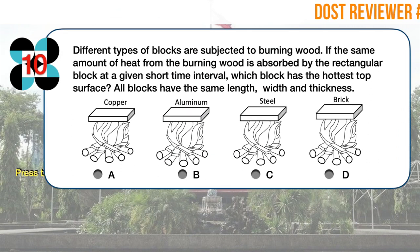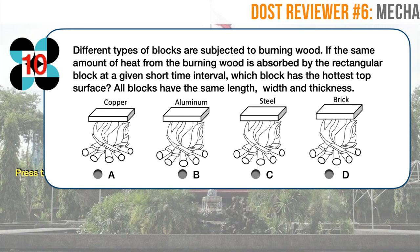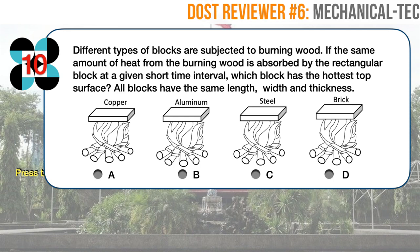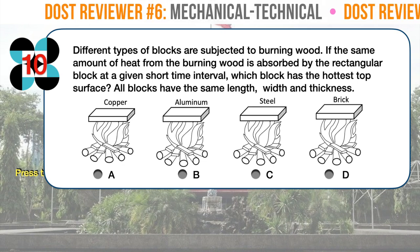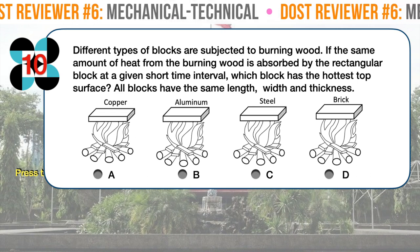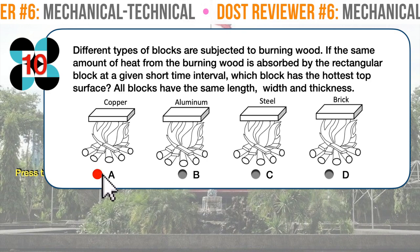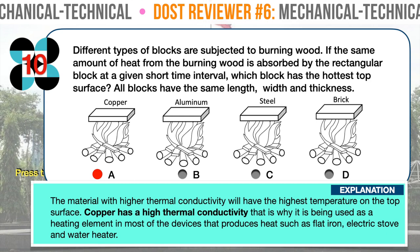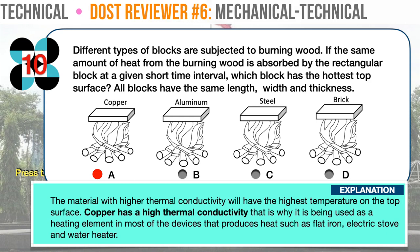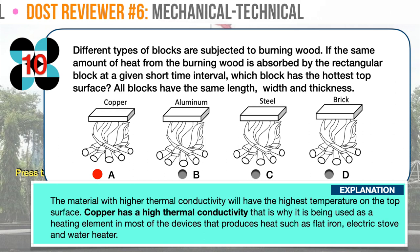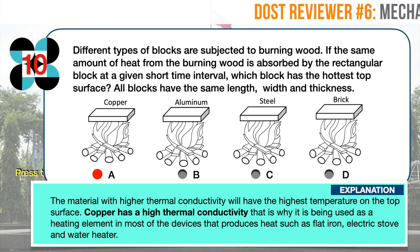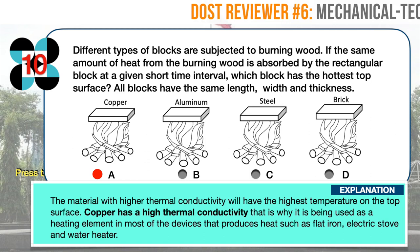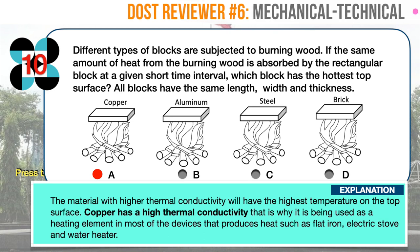Question number ten. Different types of blocks are subjected to burning wood. If the same amount of heat from the burning wood is absorbed by the rectangular block at a given short time interval, which block has the hottest top surface? All blocks have the same length, width, and thickness. The correct answer is A: copper. The material with higher thermal conductivity will have the highest temperature on the top surface. Copper has the highest thermal conductivity among the four materials and is used as a heating element in devices such as flat irons, electric stoves, and water heaters. Brick has the lowest thermal conductivity and is used to dissipate heat in furnaces or fireplaces. Aluminum has a higher thermal conductivity compared to steel.